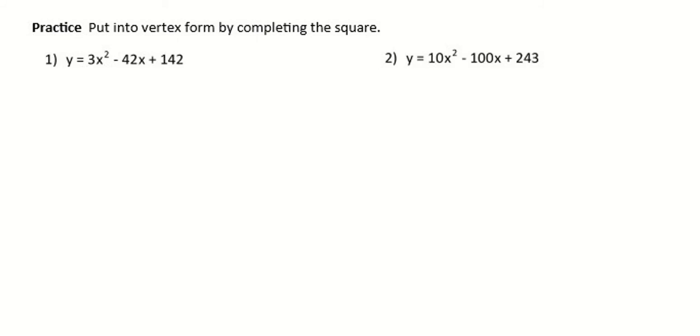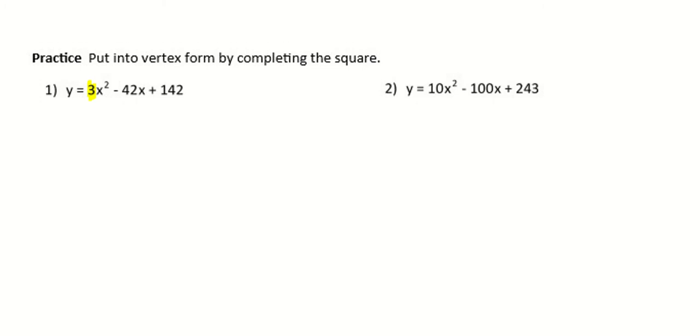All right, in part two of completing the square, we're now going to look at what happens when your standard form of your parabola has a value at the front where it's not one anymore. Okay, well that cranks it up just a little bit. The process is still kind of the same, but let's remember what the vertex form kind of looks like. So I'm just going to do an example of vertex form.